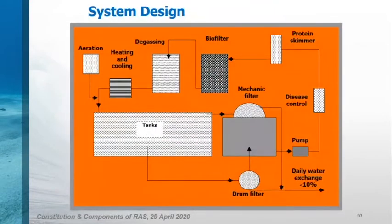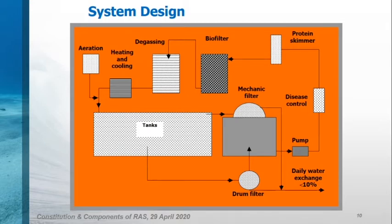In this picture you can see a RAS design similar to our black sea trout unit. Water collected from tanks flows through the mechanical filters. This mechanical filter system can be a screen, drum, automatic filter or a combination of them. Later, water goes to the biofilter for nitrification. After that, similar to the previous slide, degassing and aeration stages are carried out. Depending on the target species, a heating or cooling system can be used. Also, in marine systems, protein skimmers can be used.